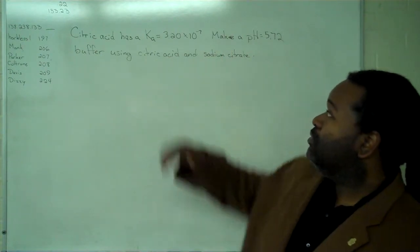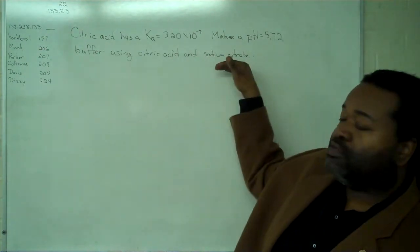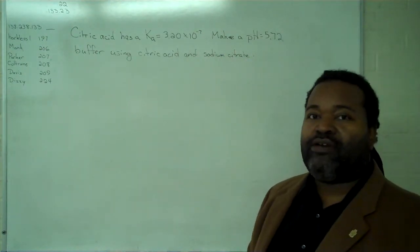In this particular example, we'll be looking at making a buffer of citric acid with sodium citrate as the counter ion.